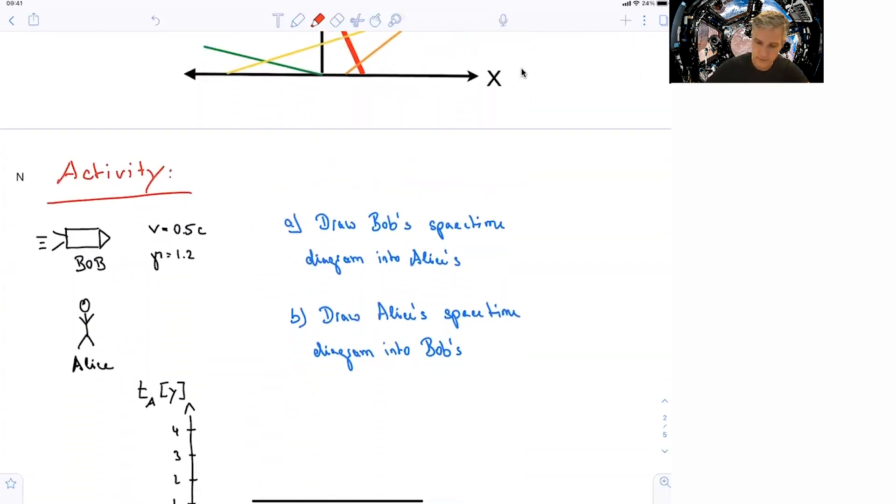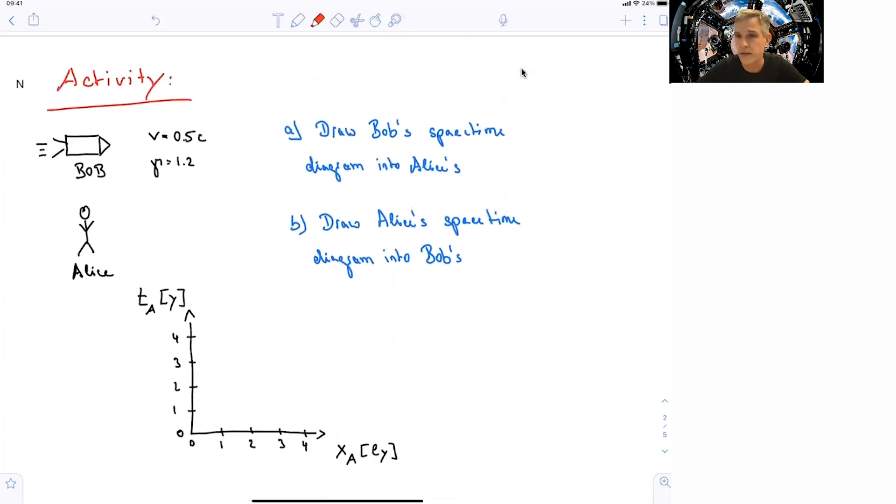All right, now we want to actually make them useful. Yes, they can be used in order to describe certain event lines, but they're really useful when you describe events happening for a different observer. So in this activity, I invite you to draw Bob's space-time diagram into Alice's, and then as a second step, draw Alice's space-time diagram into Bob's.